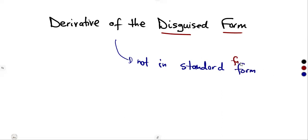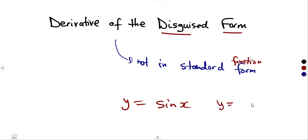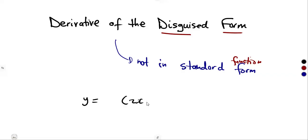The standard form is the part where we have a standard function that can be differentiated directly. For example, if you are given y = sin(x) or y = e^x, we have the basic derivative for these. But we have expressions which are totally disguised — for example, y = (2x − 3)(2x + 3).